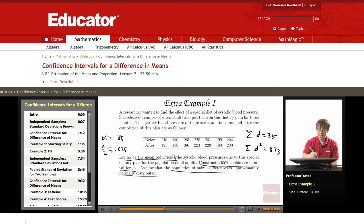Now what's n here? n are the number of pairs that we have. n is 7, so my degrees of freedom are going to be 6.